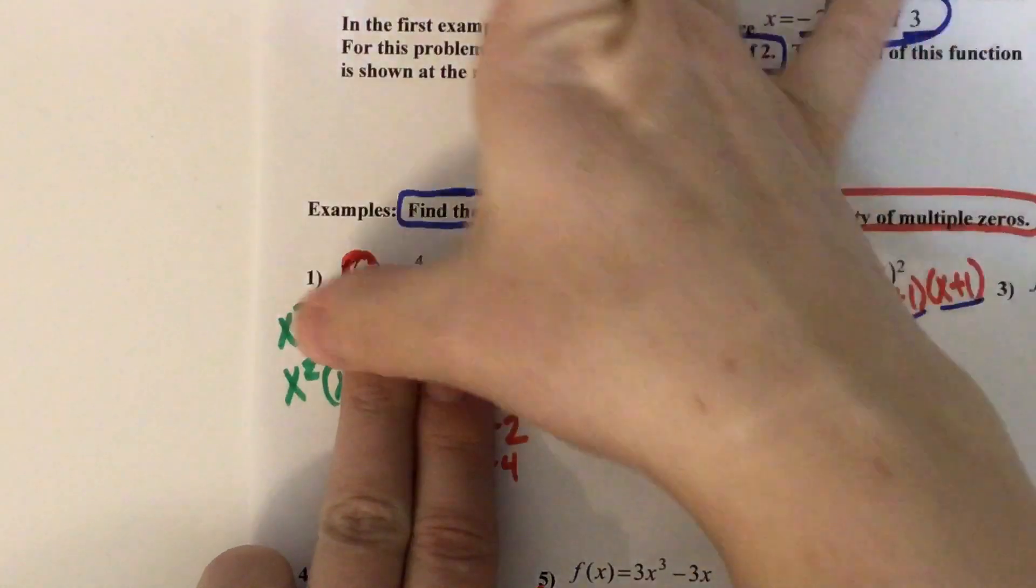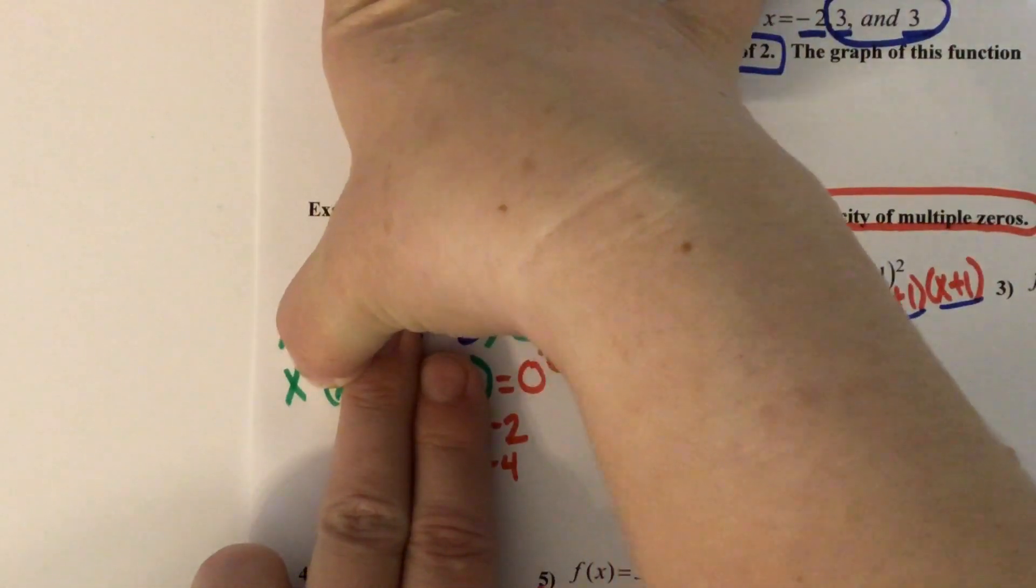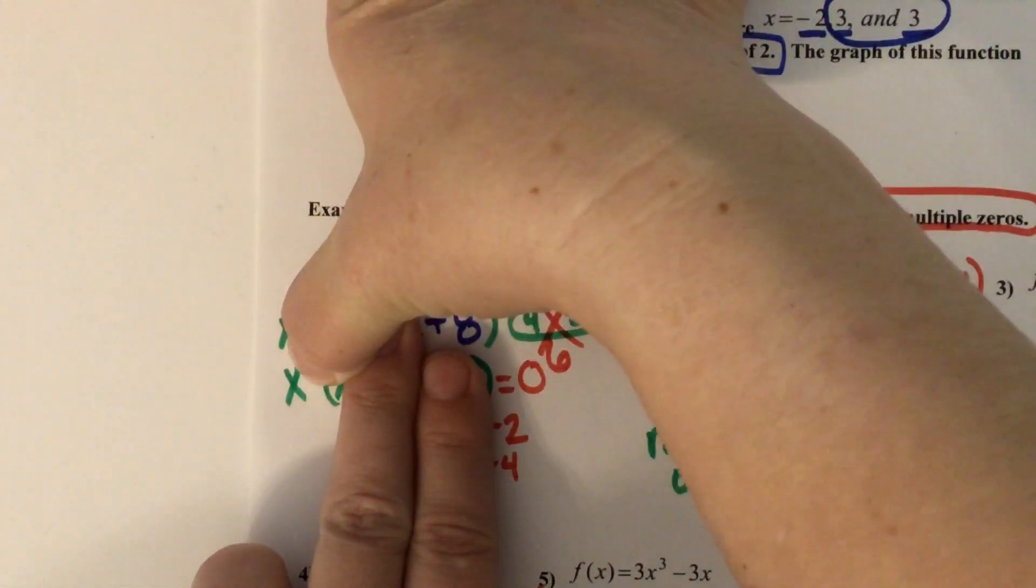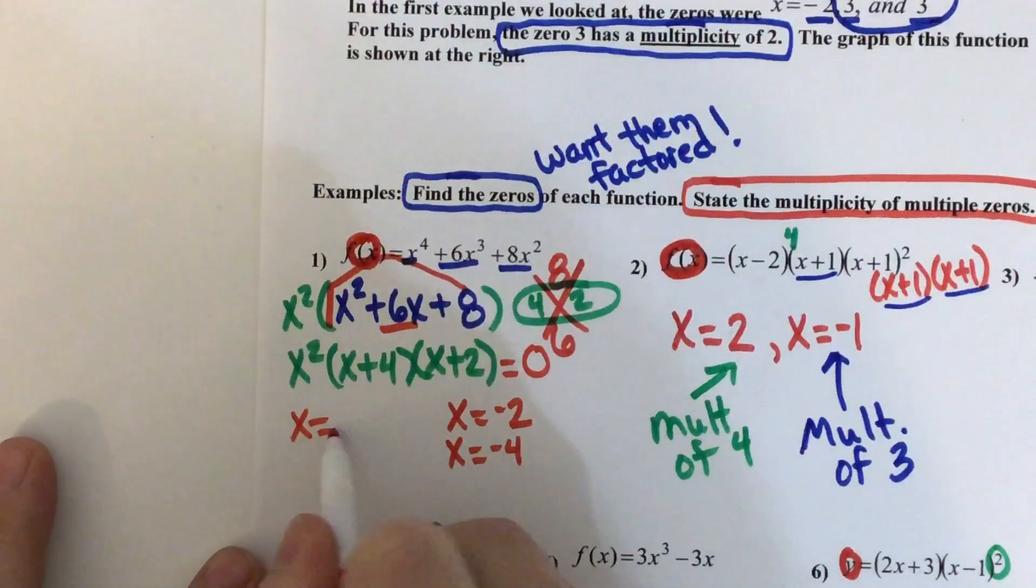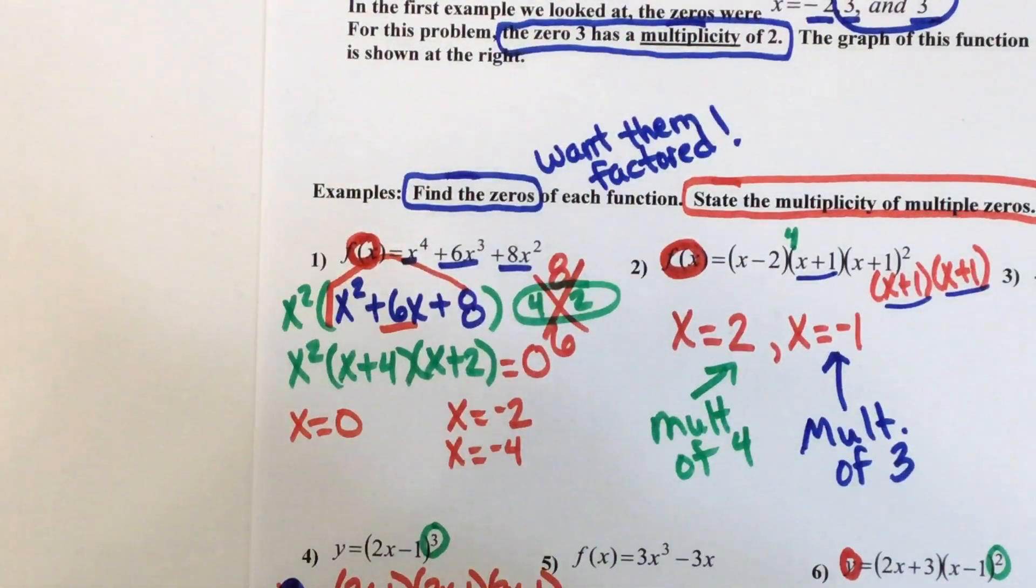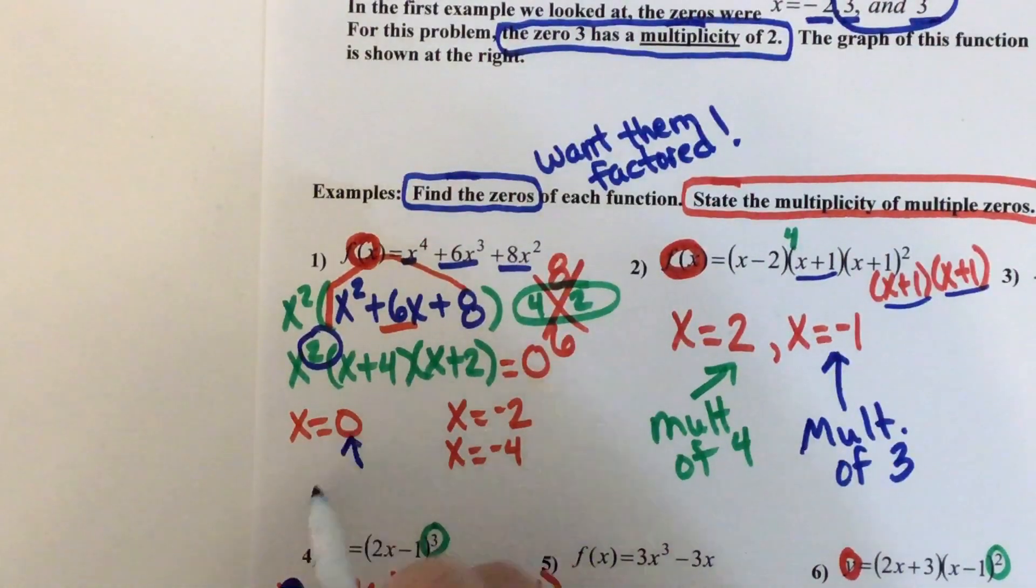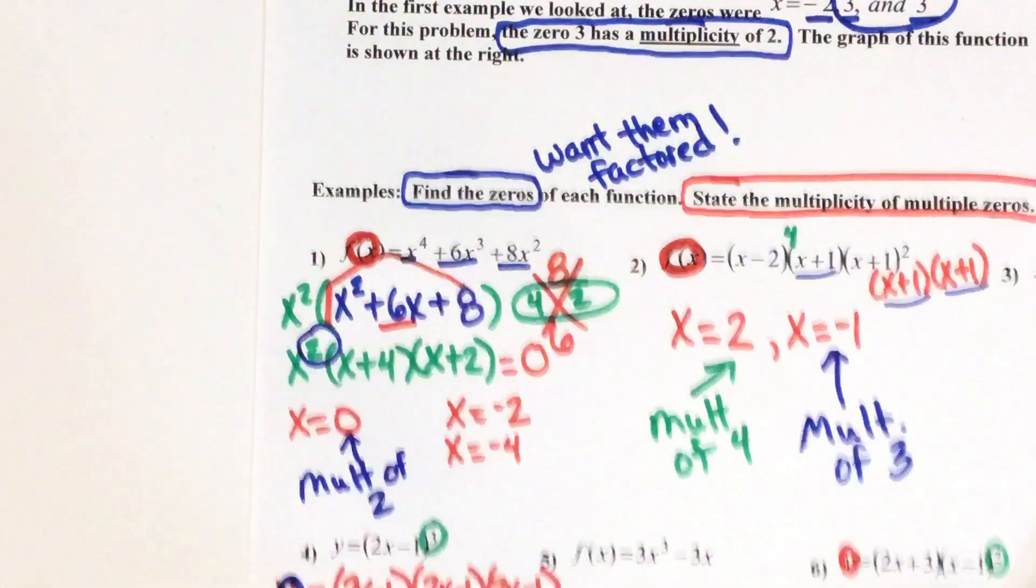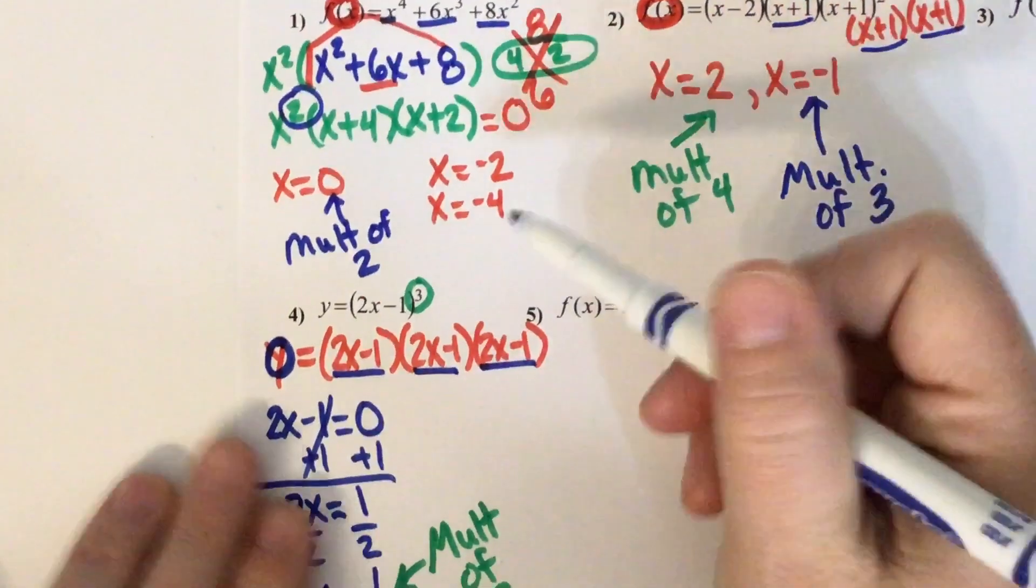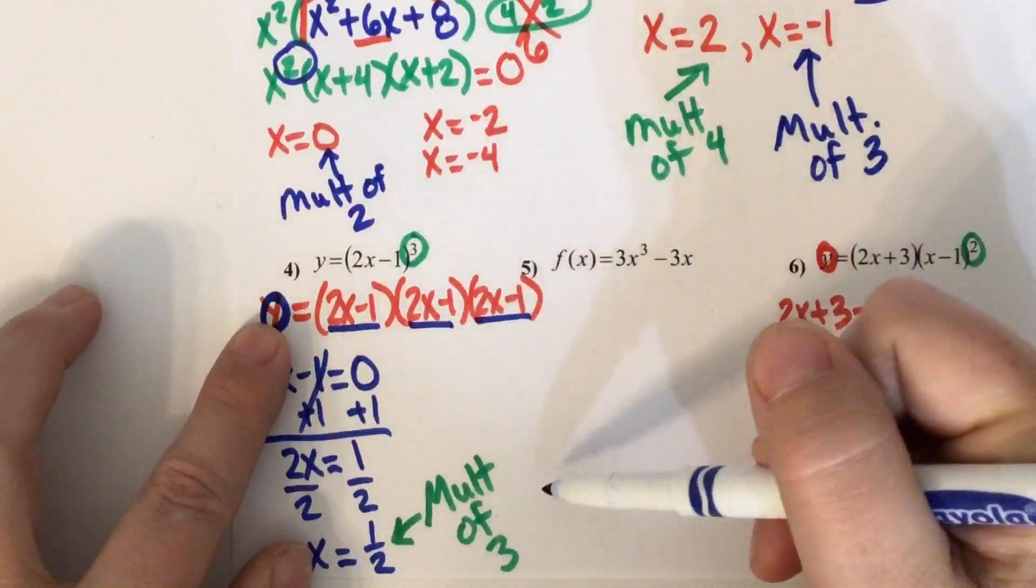Now this one tricks people, so ignore the exponent. If you set x equal to zero, you just get x equals zero. Remember the exponent just tells you how many times it happens. So this happens twice. Zero has a multiplicity of two, just like when this exponent down here was a three, we said it had a multiplicity of three.